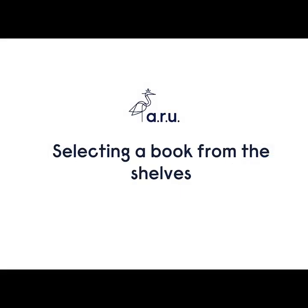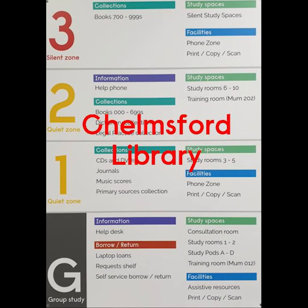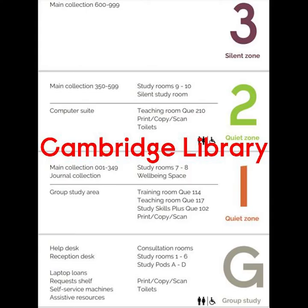Selecting a book from the shelves. Have the shelf number you need to find the book within the library. Use the signage as you enter the library to locate the floor you need to go to. The 800 section is on the third floor of the Cambridge library.